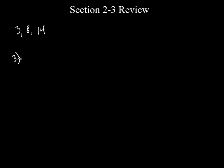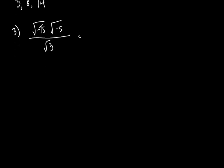Number three. Square root of negative 15 times square root of negative 5 over square root of 3. What do you think the first thing you want to do is on this? Do you want to multiply 15 times 5? Maybe it's what you want to do, but do you think that's the best thing? Every time we've done a problem with a square root of a negative number, we always did this first. Let's get rid of that square root and turn it into an i.